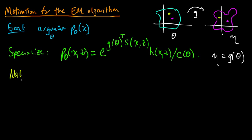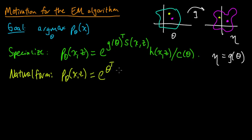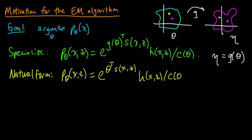So that's the argument for why it's okay to assume this is in natural form. We will assume that this exponential family is in natural form, meaning G of theta equals theta, with some vector-valued S of X and Z. Now we want to maximize this thing. The usual thing we do is differentiate and set the derivative equal to zero.